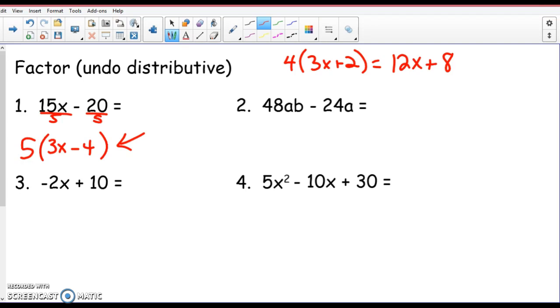Right here, this is my answer. How do I know that that is exactly the same as 15x minus 20? Now if I use the Distributive Property here, 5 times 3x is 15x. Positive 5 times negative 4 is negative 20.